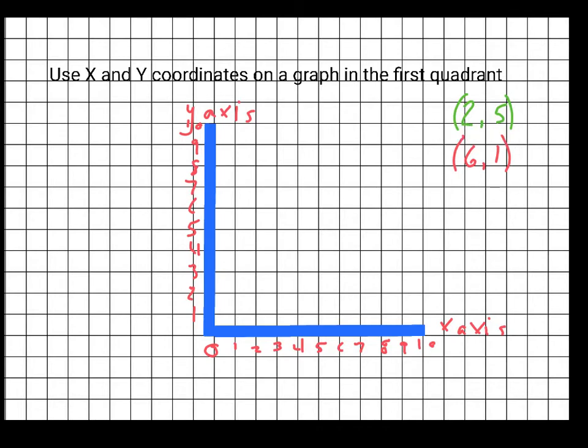All coordinates have to use brackets at the beginning and at the end. The first digit in the coordinate is always the x-axis along here, the second digit, in this case the 5, is always going to be the y-axis.